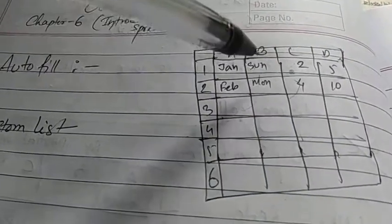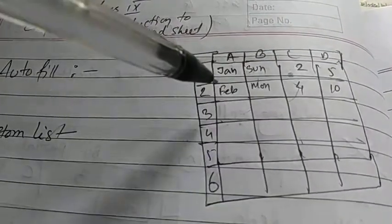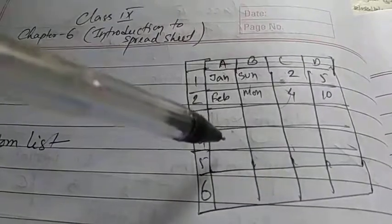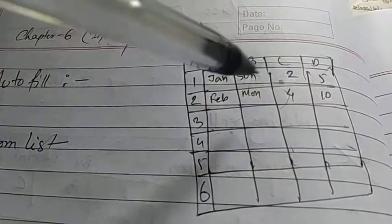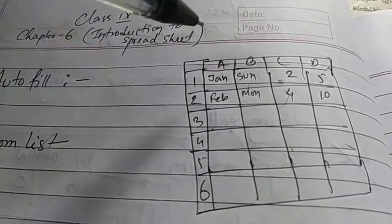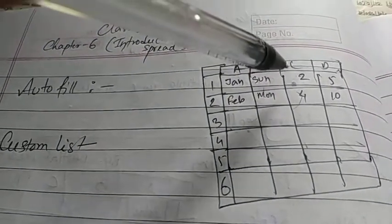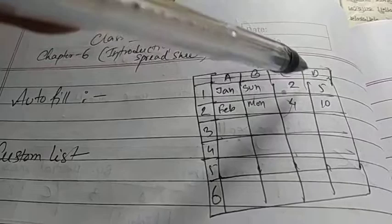Using the autofill feature, you can fill up cells in a row or column with predefined series of data, generally months and days. You can also fill numbers - even numbers, odd numbers, or a pattern.